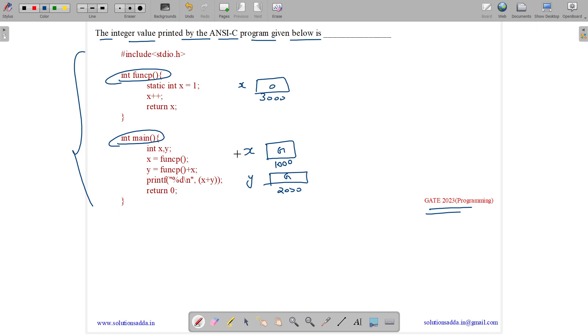Now at the runtime, these two variables x and y are created with garbage value. Then funcp function is called. So we come over here, do static int x equals to 1. So this value is changed to 1. x plus plus. So it is changed to 2. Return x. So 2 is returned to funcp. 2 comes over here and it is stored in variable x. So 2 is stored over here.